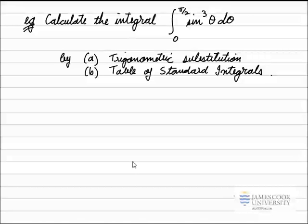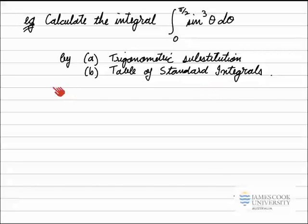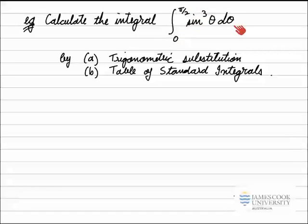In this example, we've been asked to calculate this integral using two methods: a trigonometric substitution and the table of standard integrals. This recording will show Part A; there will be another recording for Part B. The trigonometric substitution is working with the integrand sine cubed theta, integrating with respect to theta with theta values going from zero to pi on two.